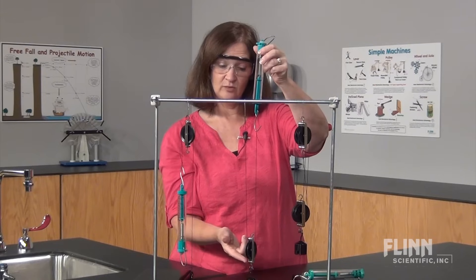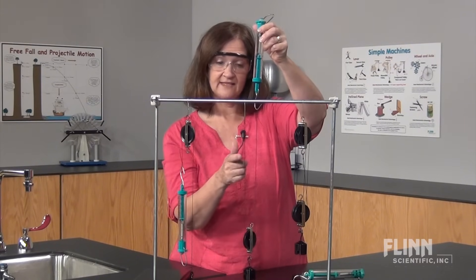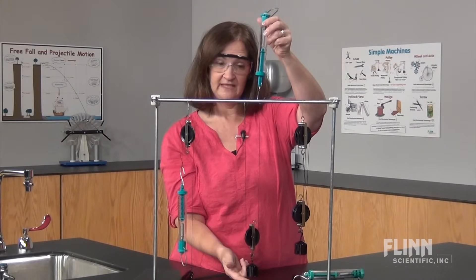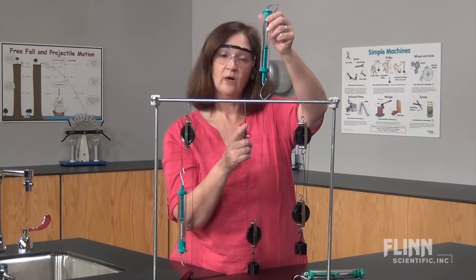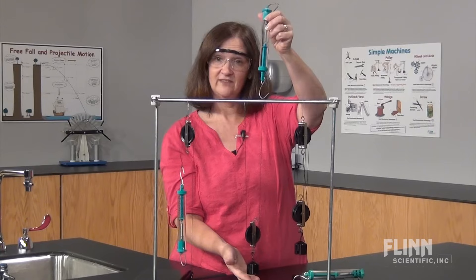However, with a single movable pulley, both sides of the rope are supporting the load that's being lifted, so the mechanical advantage is two and only one newton of force is required to lift a two newton weight.